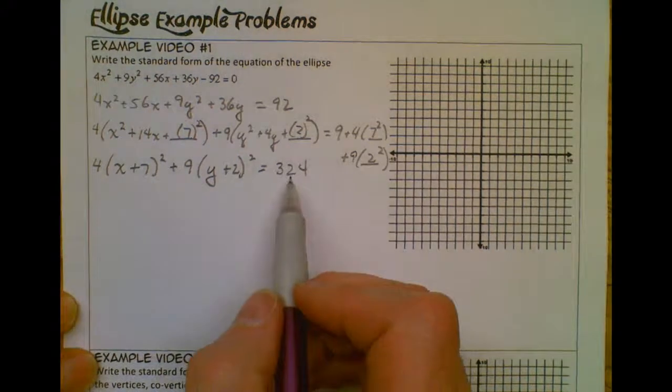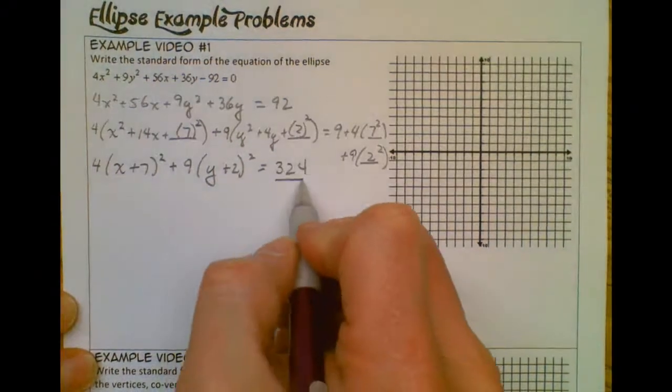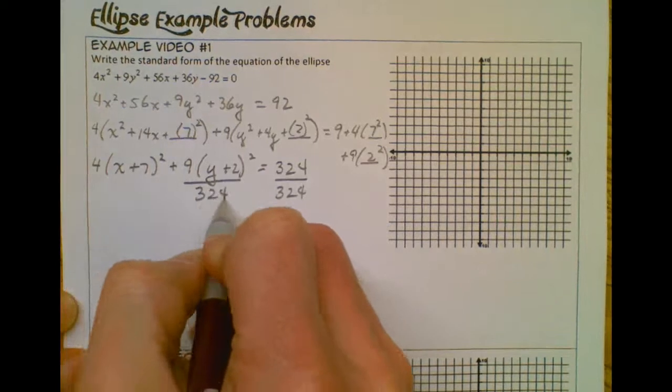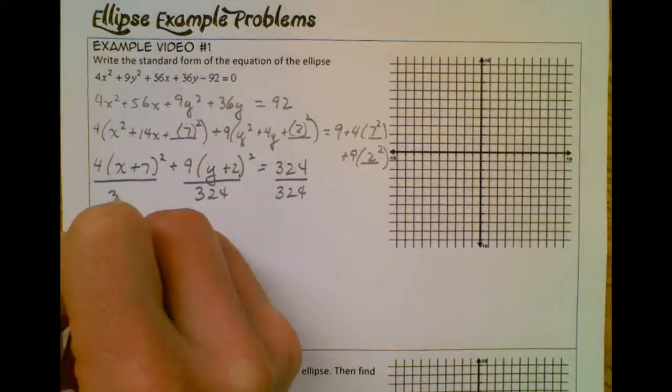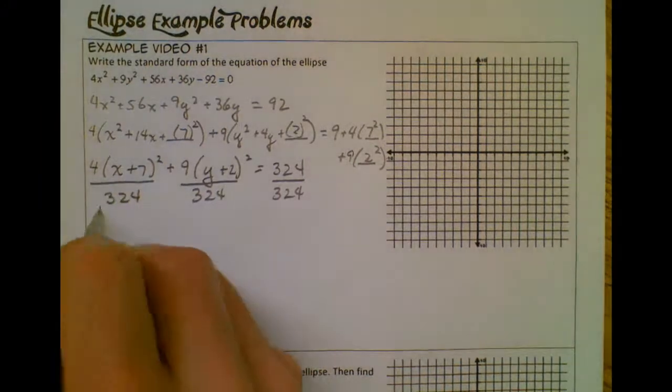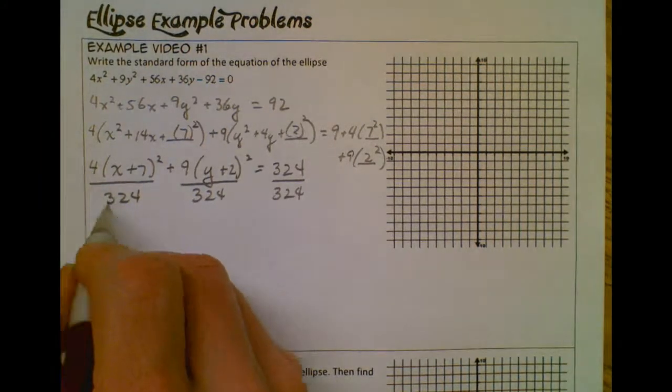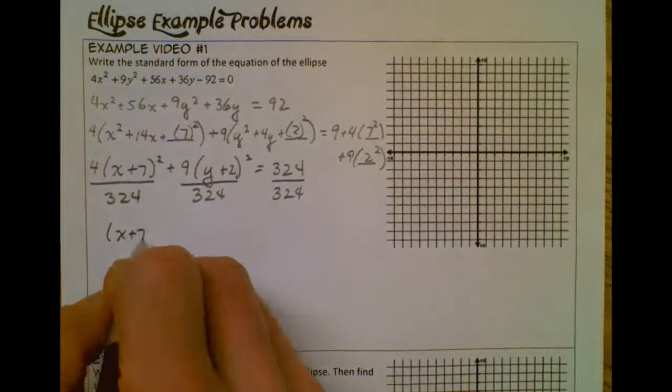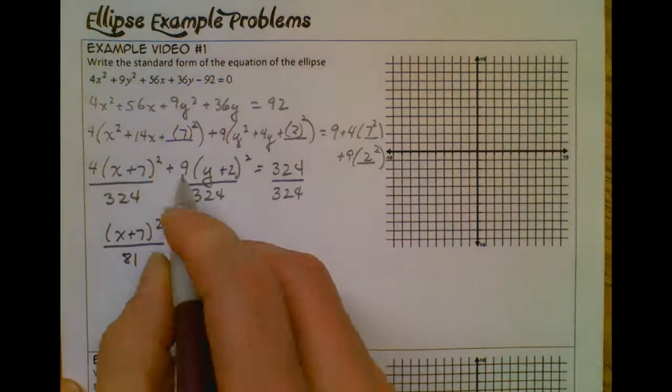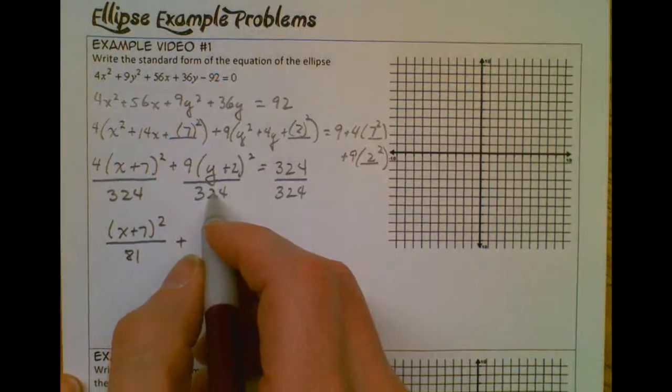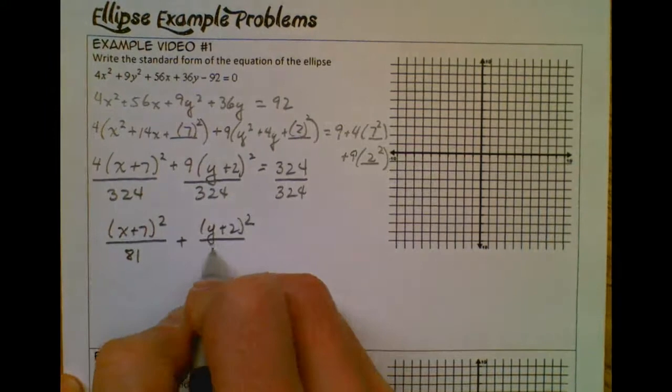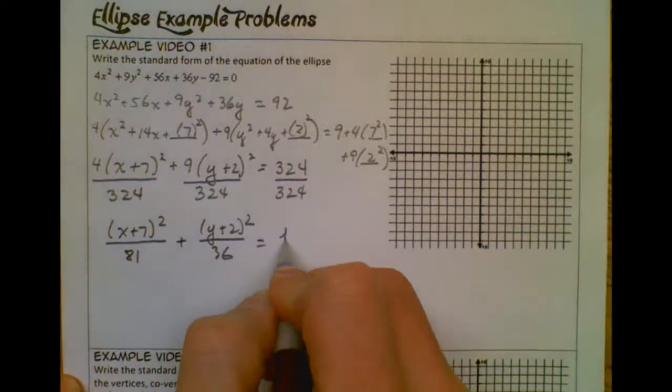Alright, for my ellipse, it's got to equal to 1. So I'm going to divide by 324, so then it's equal to 1. So I'm going to divide this term by 324 then, and also divide this term by 324. So reducing 4 over 324, I get 1 over 81. So this becomes x plus 7 squared over 81. And then 9 over 324, that reduces to 1 over 36. So I've got y plus 2 squared over 36, and then it equals 1.